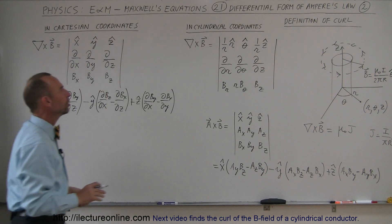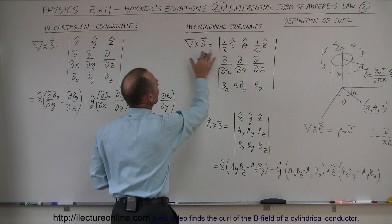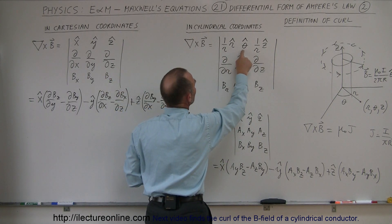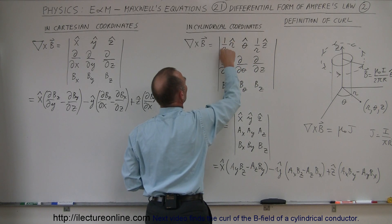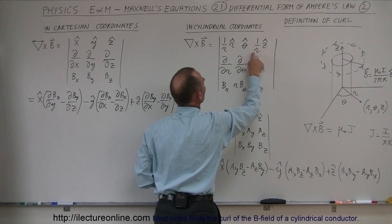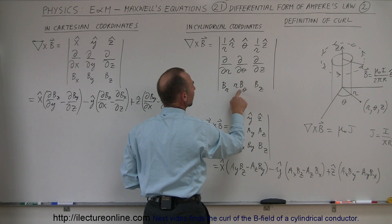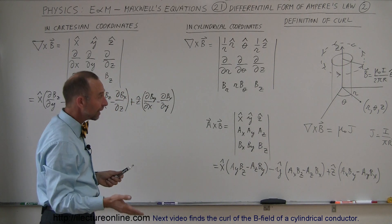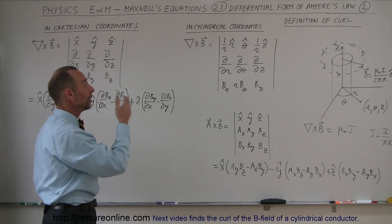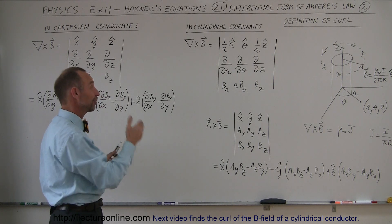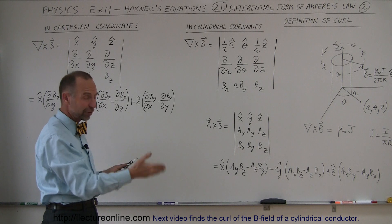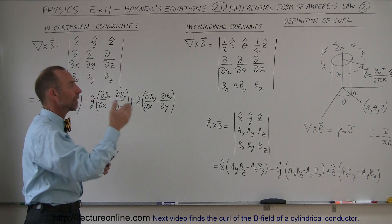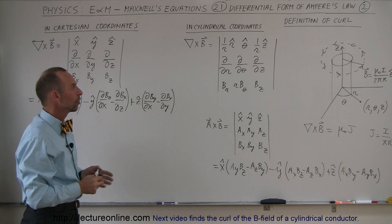What does it look like when you take the curl of B in cylindrical coordinates? The cylindrical form looks a little different: you have the r, theta, and z unit vectors, but in front of the r unit vector you write 1 over r, and in front of the z unit vector you also write 1 over r. In front of the B component in the theta direction you write an r. To understand where these factors come from, you'd need to review how to convert from Cartesian to cylindrical coordinates, but for now just accept it.